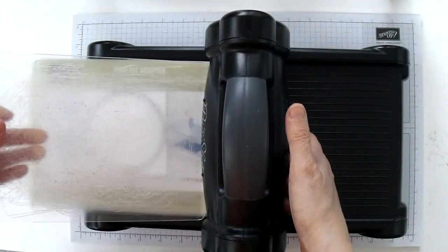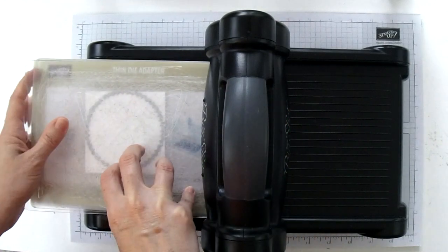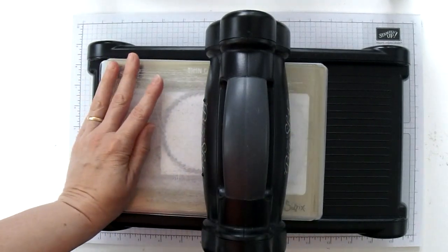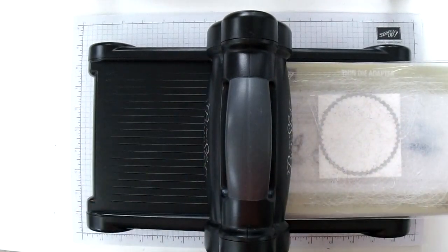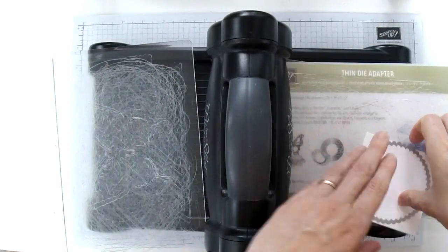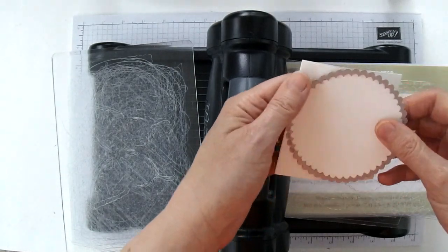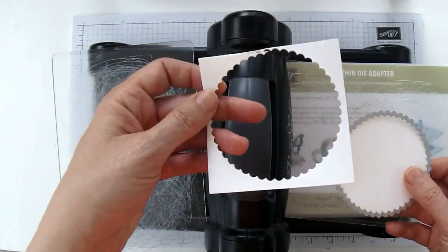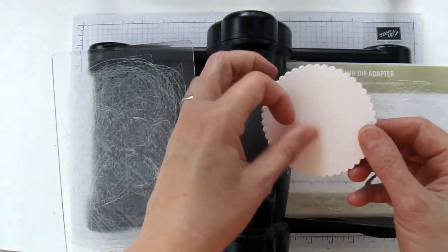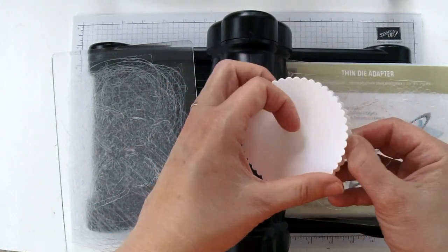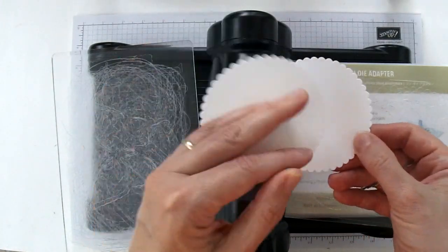And then I'm going to put the other cutting plate on top, and then I'm just going to run that through my Big Shot. Then you can take these outer pieces and throw them out, and you're left with two scalloped circle pieces like that.